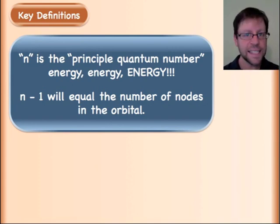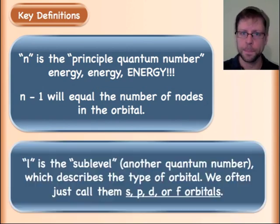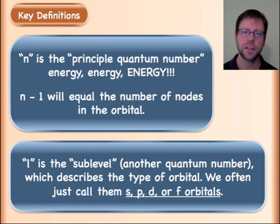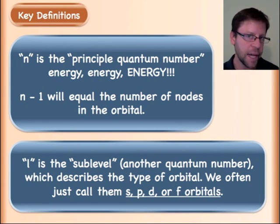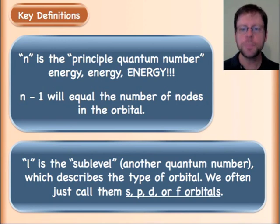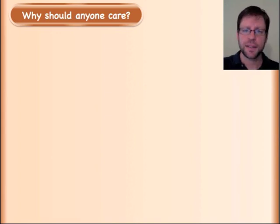The node idea in particular: n minus one is the number of nodes that the electron will have in its standing wave around the atom. There's another quantum number, typically called l, the sublevel, and it is a quicker way for us to describe what type of orbital you're looking at — typically your s, p, d, and f — and that will make more sense in just a moment.